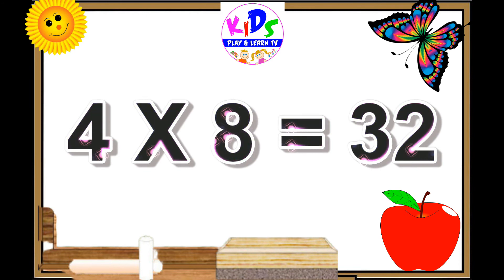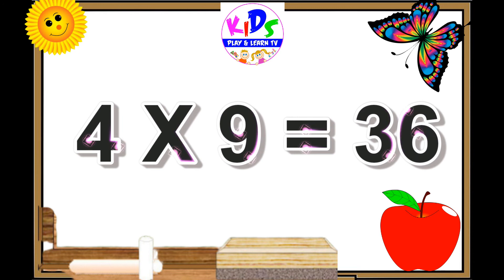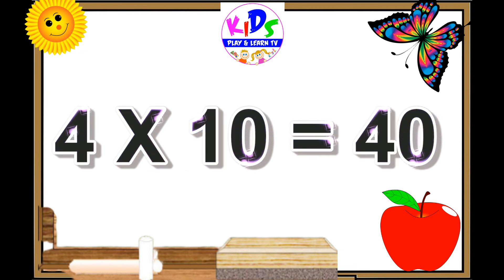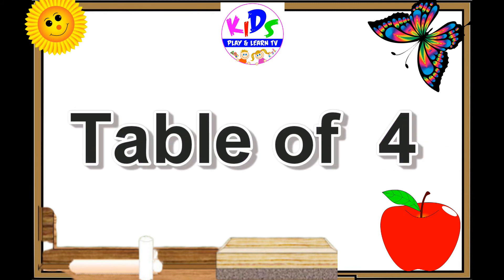4 sevens are 28, 4 eights are 32, 4 nines are 36, 4 tens are 40.